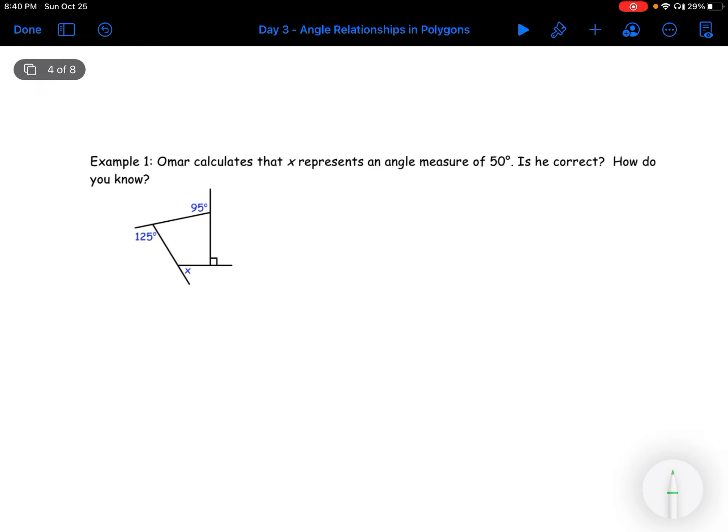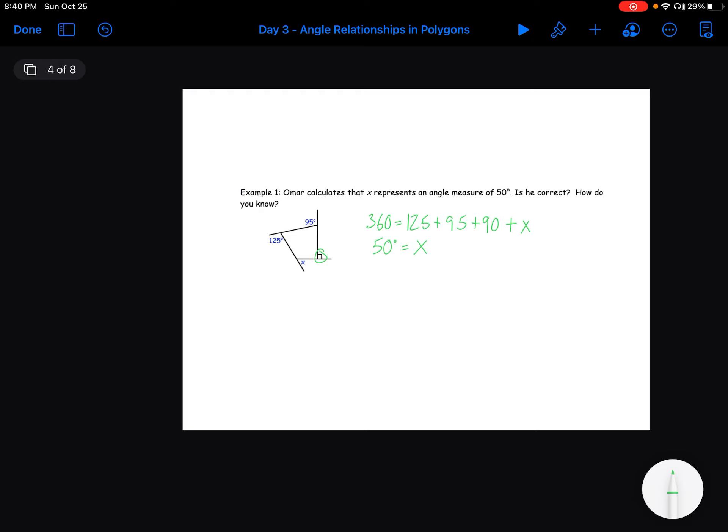Let's look at this example. So Omar calculates that x represents the angle or an angle of 50 degrees. Is he correct? How do you know? Well, this is exterior angles, so we could say that 360 equals 125 plus 95 plus 90, the 90 degree angle, plus x. Now all we would have to do is do 360 minus 125 minus 95 minus 90, and we're going to find that x is actually equal to 50. And therefore we know that Omar is correct.